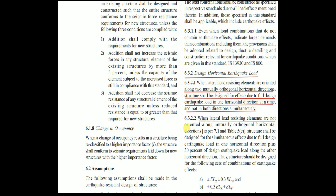When lateral load resisting elements are not oriented along mutually orthogonal horizontal directions, the structure shall be designed for simultaneous effects: full design earthquake load in one horizontal direction plus 30 percent of the design earthquake load along the other horizontal direction. So: ELx ± 0.3 ELy, or ELy ± 0.3 ELx.